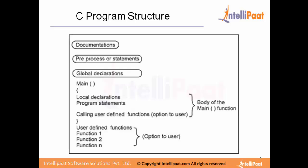So this is how the C program structure looks like. The first section of a C program is documentation — it is not mandatory, but it always helps to understand what the C program is all about. Anybody reading your C file can get a first-level understanding of what your program does, what inputs it takes, and what output it gives. You will also have a section called preprocessors, which is nothing but a set of library functions that you are using in your C program.